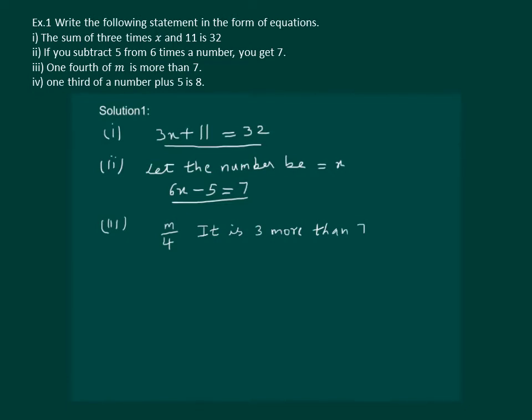So, in other words, we can say m by 4 minus 7 should be equal to 3. Hence, m by 4 minus 7 equal to 3 is the required equation.